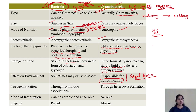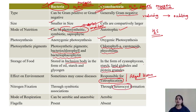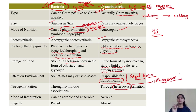Nitrogen fixation is an important feature of cyanobacteria. Cyanobacteria can not only perform the photosynthetic process, but they can also fix atmospheric nitrogen. They do this by forming a specific type of cell called a heterocyst. In heterocyst cells, there is an enzyme known as nitrogenase, which is responsible for fixation of environmental nitrogen.